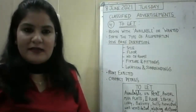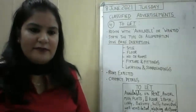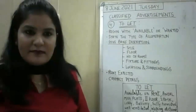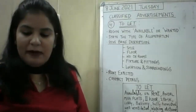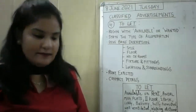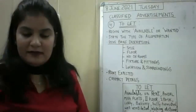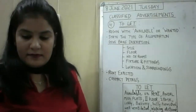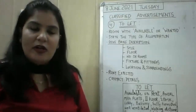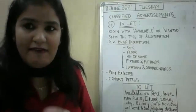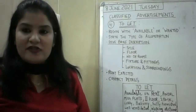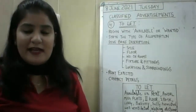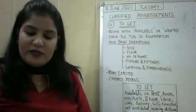The statement is: you want to let out a flat. Let out means to give on lease or to give it on rent. Prepare an advertisement for publication in a newspaper. Sometimes in the statement itself they have given you hints — like in one example they mentioned: for publication in the newspaper, giving location of the building, nature of accommodation, and rent expected. So the points are already given to you. In that case you will use the given points as well as add your own points.